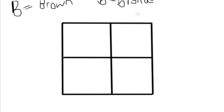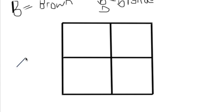So let's pretend that we have two heterozygous parents. Remember, heterozygous means it's got one copy of each allele. On the top you're going to put dad, and on the side you're going to put mom.